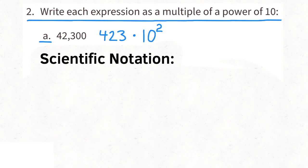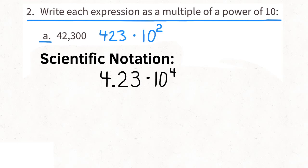This lesson is preparing you to learn how to write in scientific notation. When you write an expression in scientific notation, you put the decimal directly after the first digit. So instead of 423, it'll be 4.23. Since we move the decimal two places to the left, we need to increase the exponent by two, so it becomes 10 to the power of 4 instead of 10 to the power of 2. Both expressions are written as a multiple of a power of ten, so you can use one or both answers.